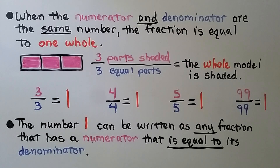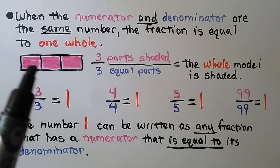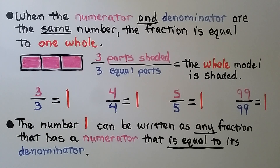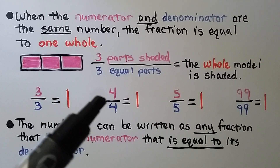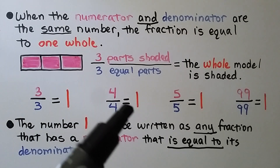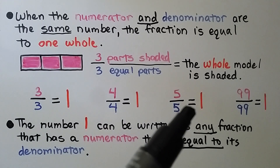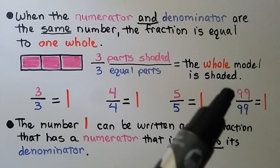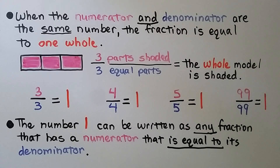When the numerator and denominator are the same number, the fraction is equal to one whole. In our model, we have three equal parts and three parts are shaded — the whole model is shaded, that's one whole. Three-thirds, same numerator and denominator, equals one whole. If we had four-fourths, that would be equal to one whole. Five-fifths equals one whole. Even ninety-nine ninety-ninths equals one whole. The number one can be written as any fraction that has a numerator equal to its denominator.